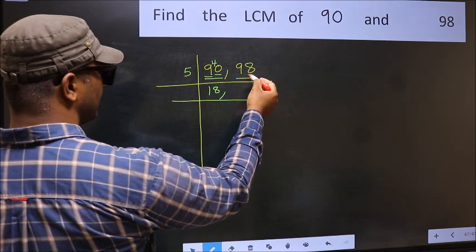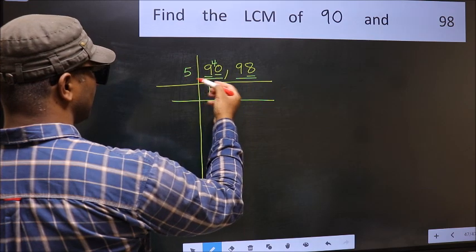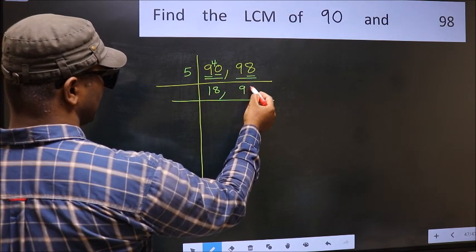The other number, 98—last digit is neither 0 nor 5, so this is not divisible by 5. So you write it down as it is.